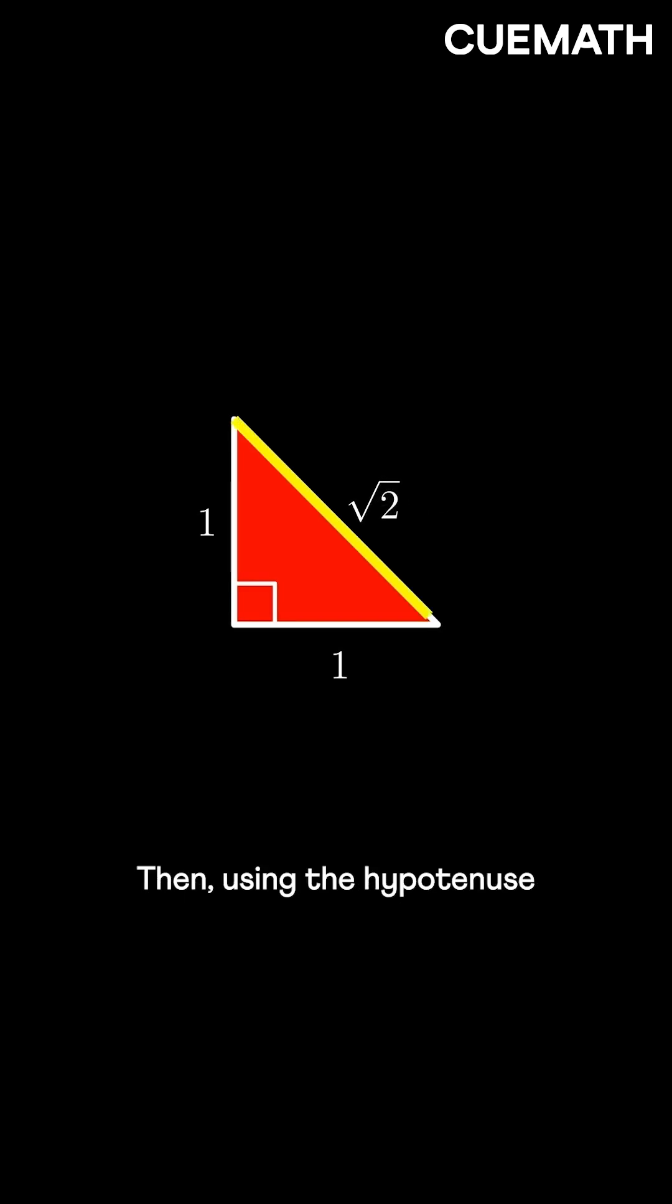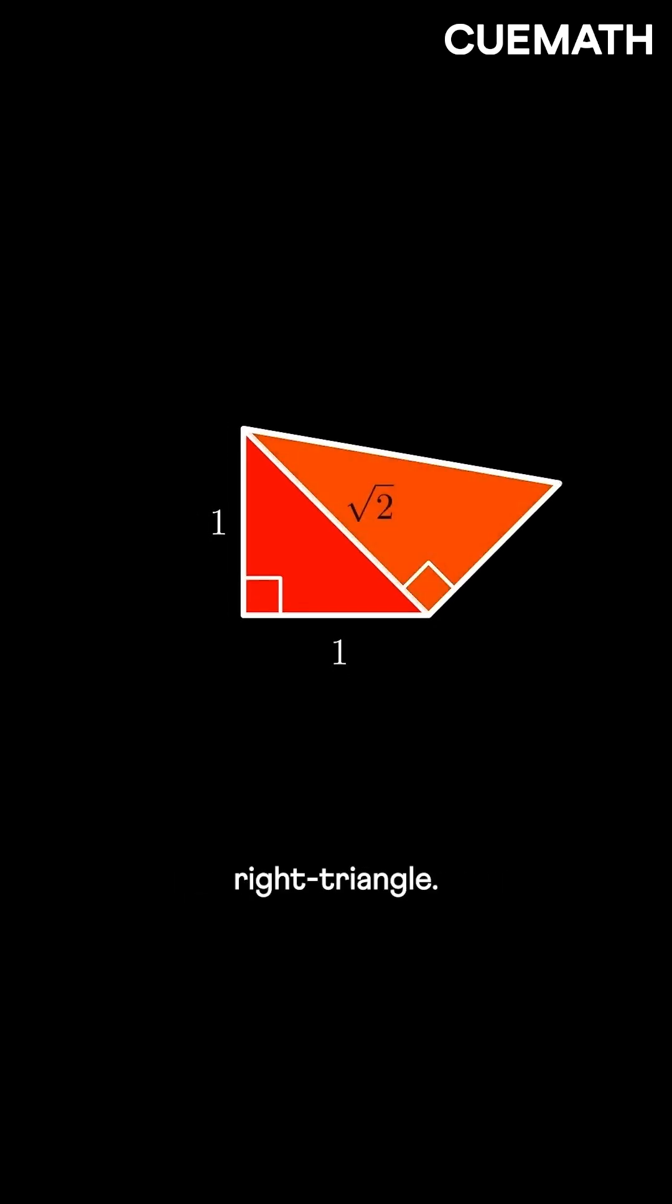Then, using the hypotenuse of this triangle, we can create a new right triangle. Its side lengths will be 1 and √2. So the length of its hypotenuse will be √3.